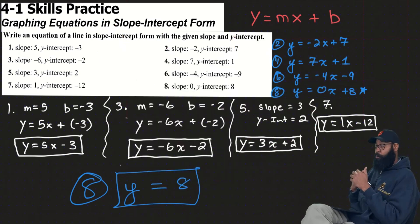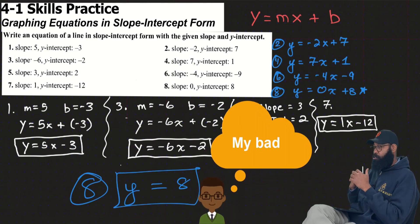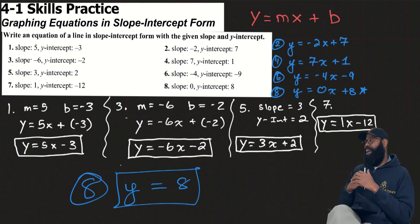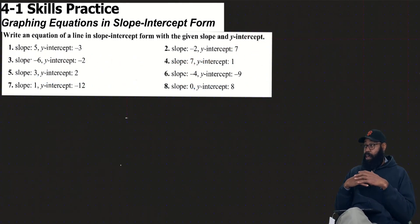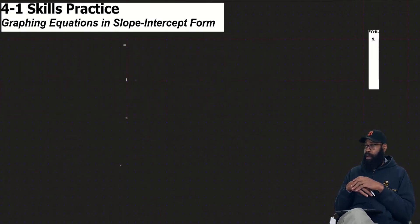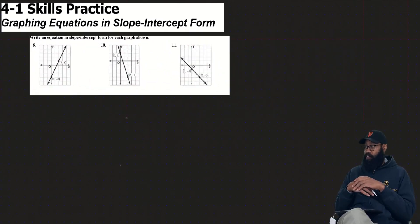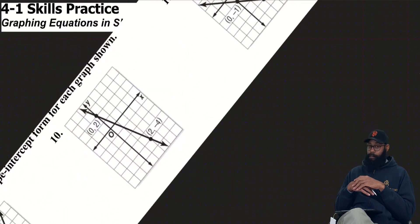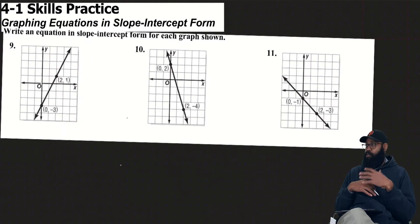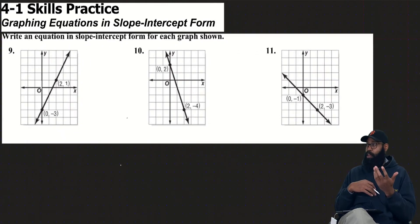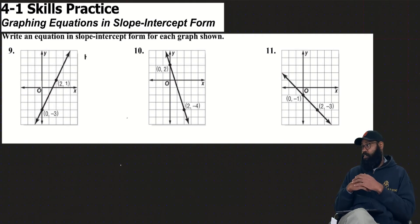First part's done! Let's move on to part 2. We're still dealing with linear equations in slope-intercept form. We need to write an equation in slope-intercept form, so I still need the variable m for slope and the variable b for y-intercept.